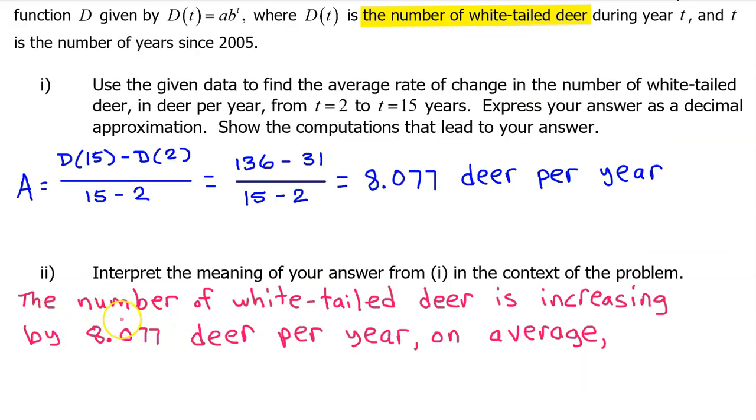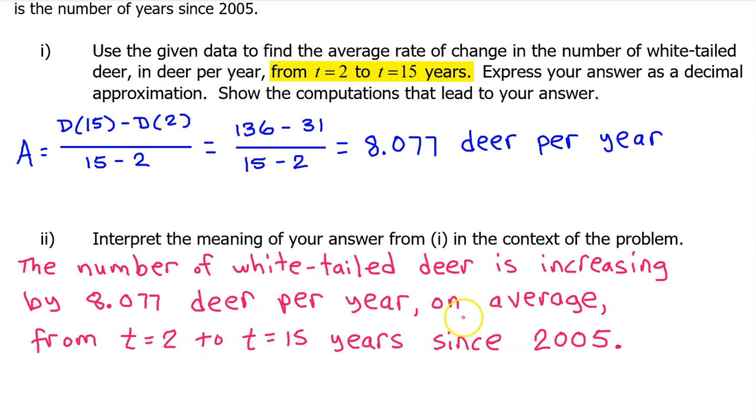So begin by saying the number of white-tailed deer is increasing by 8.077 deer per year on average. Notice this is a comma, not a period. If you stop here, you will lose a point because, for credit, you must mention the time interval over which the average rate of change was calculated, including the units.